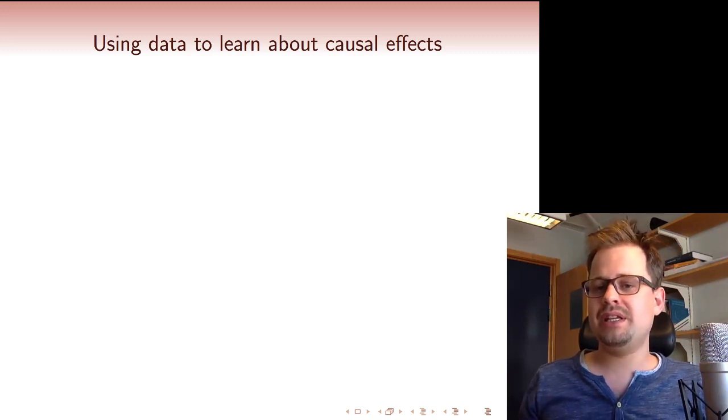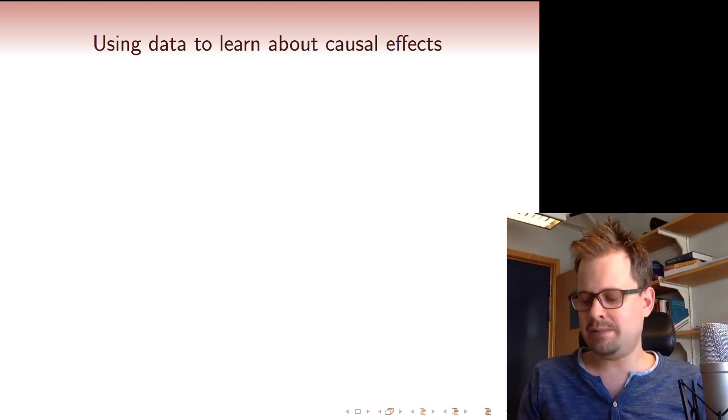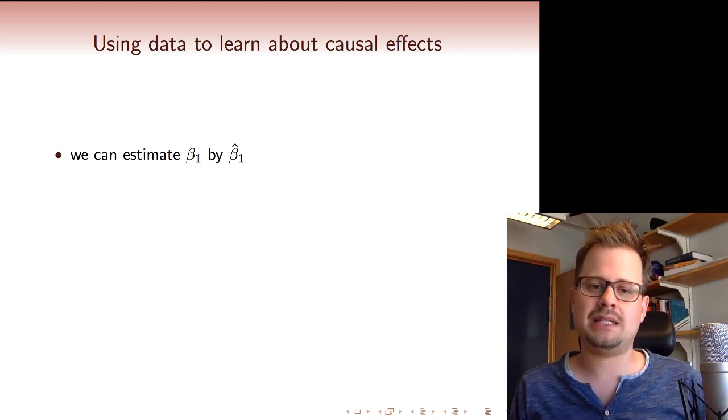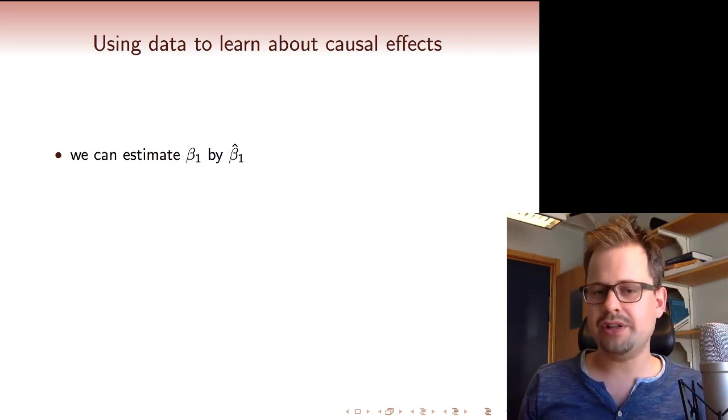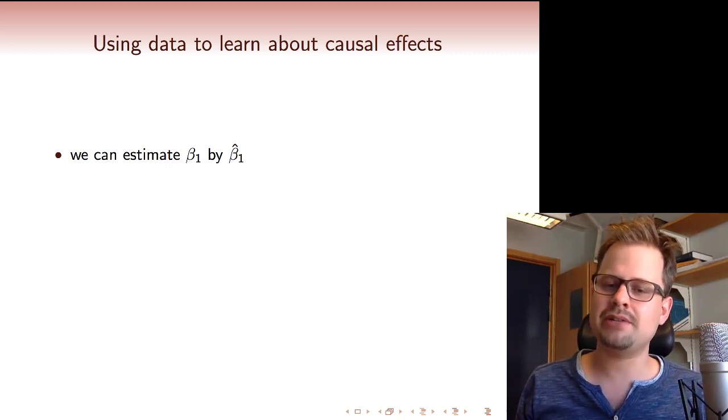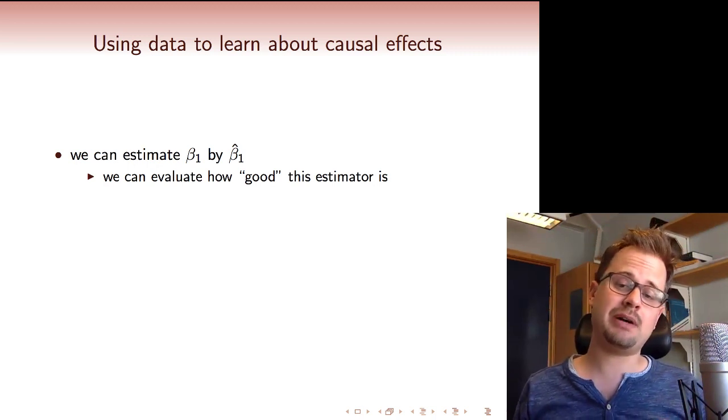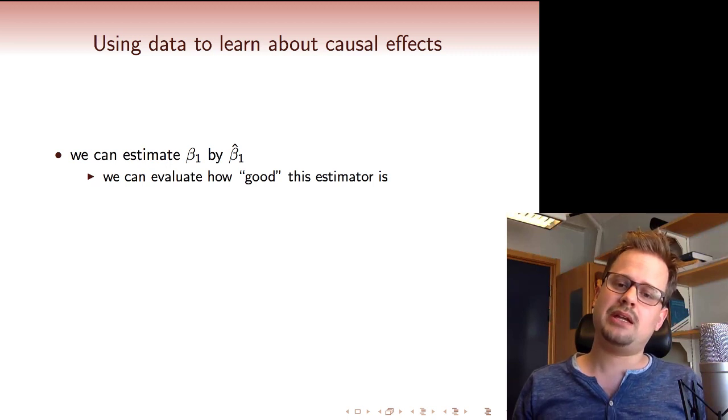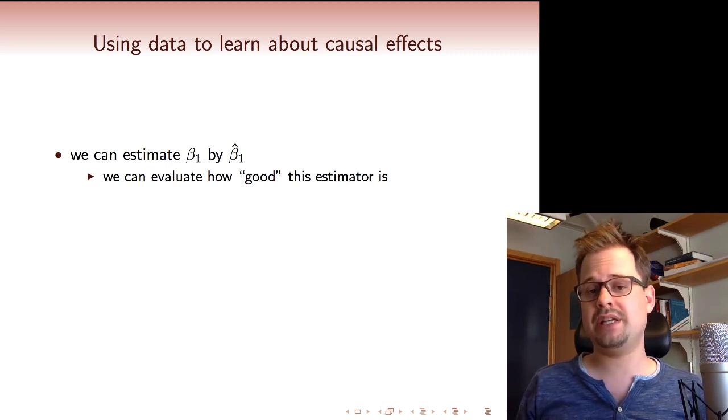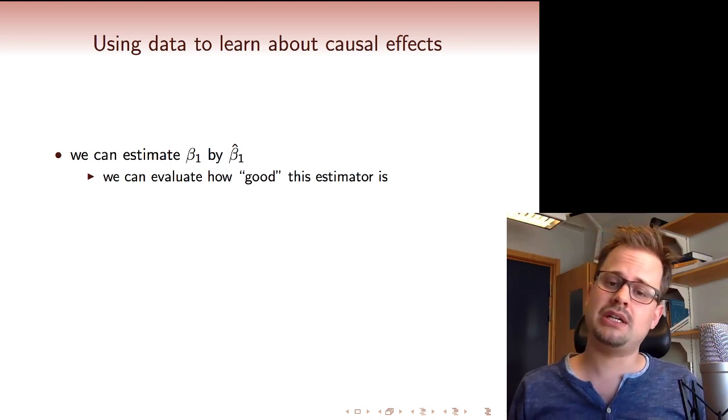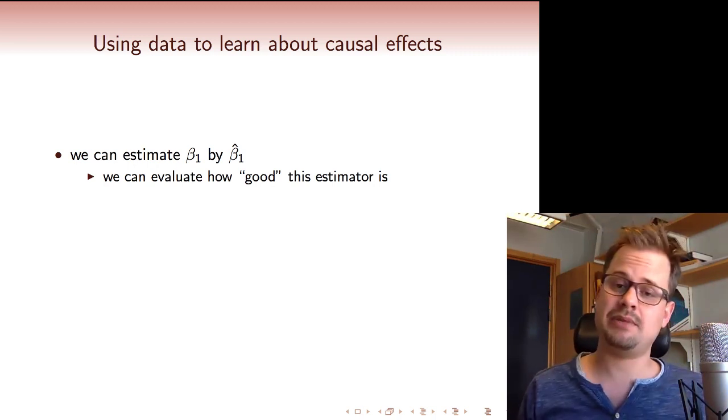Now, these coefficients are population quantities we don't observe, but we can estimate them using our OLS estimator. For example, we can estimate beta1 by beta1 hat, the OLS estimator. And we know this estimator is a good estimator. It is unbiased, for example. And we can also use what we've learned about the variance to determine how precise the estimator is in a certain context. Using the normal approximation, we can compute probabilities that we obtain very bad estimates, and so we have some idea of how well this estimator works.